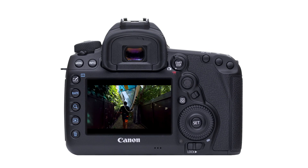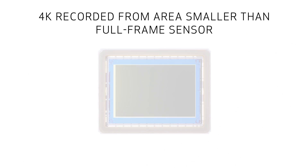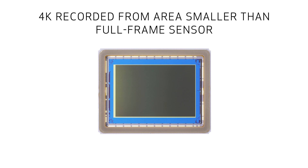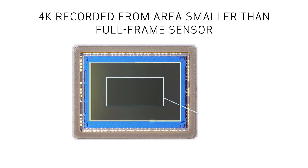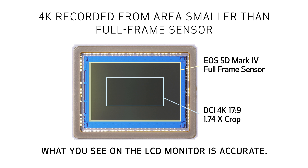Two primary differences. 4K video is recorded from a smaller, cropped area of the full-frame 5D Mark IV image sensor. What you see on the LCD monitor is accurate — just be aware that it's not taken from the full width of the sensor as it would be in Full HD or HD video recording.